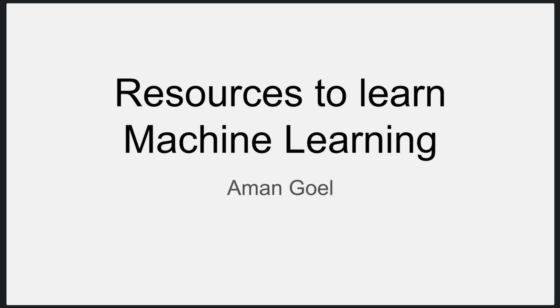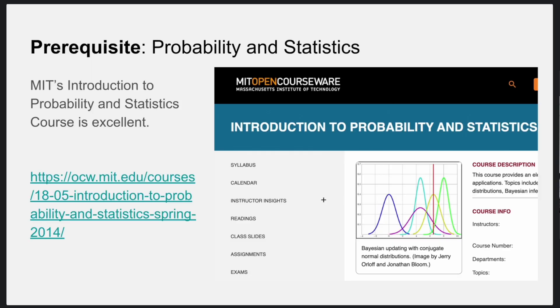The first resource is basically a course on probability and statistics. Probability and statistics is extremely important for learning machine learning because a lot of educational material in machine learning involves concepts of probability and statistics. For example, in machine learning you need to predict the probability of some event happening, and based on that you can take a decision whether something is on one side of the decision boundary or the other.